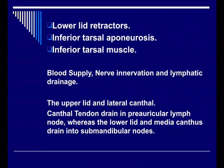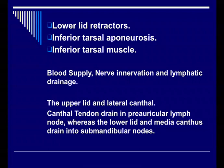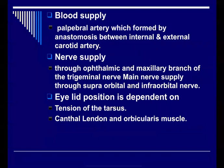Regarding blood supply and innervation: lymphatic drainage goes to the submandibular and pre-auricular lymph nodes. The upper lid and outer lateral layers drain into the pre-auricular lymph nodes, while the medial and lower lid drain into the submandibular lymph nodes. Blood supply comes mainly from the palpebral artery, formed by anastomosis between the internal and external carotid artery. Nerve supply comes from the ophthalmic and maxillary branch of the trigeminal nerve, supplying through the supraorbital and infraorbital nerves.